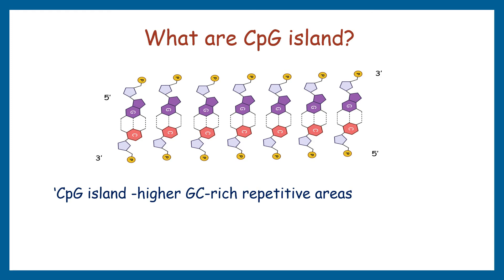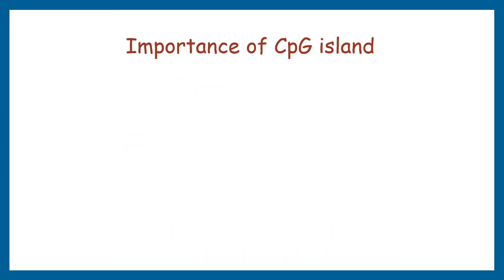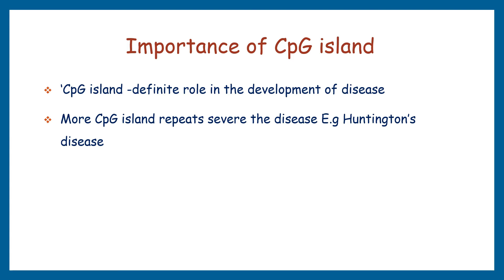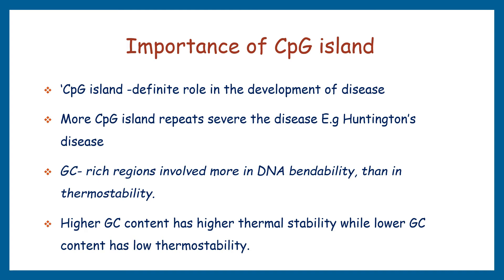Structurally, CpG islands are usually located in gene exons, introns, 5' untranslated regions, 3' untranslated regions, and also in non-coding sequences. CpG islands have a definite role in the development of disease — Huntington's disease is a classic example of a change in the number of CAG repeats in the HTT gene. Studies also showed the role of CpG islands more in DNA bendability than in thermostability. Higher GC content confers higher thermal stability, while lower GC content results in lower thermostability.